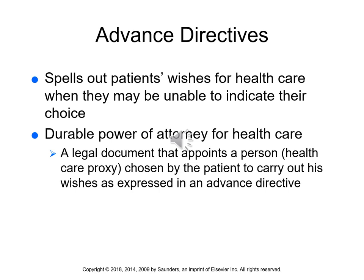Advanced directives include a living will and a durable power of attorney for health care. A living will is a document created while you're of sound mind that says what you want done for yourself medically when you're no longer able to speak for yourself. A durable power of attorney for health care is when you appoint a health care proxy — a person you appoint to make those medical decisions for you when you can no longer do so. Note that a durable power of attorney for finance cannot make health care decisions; it must specifically be a durable power of attorney for health care.